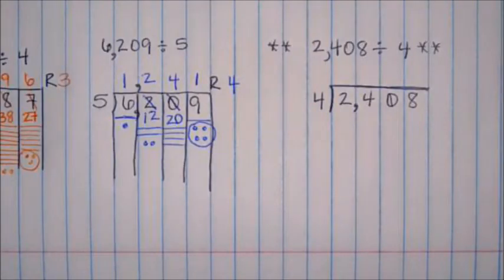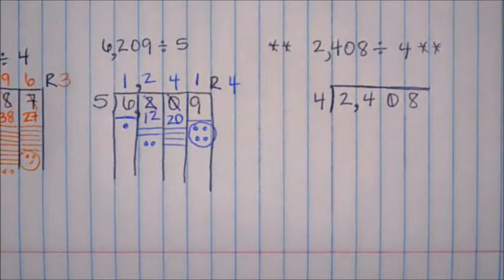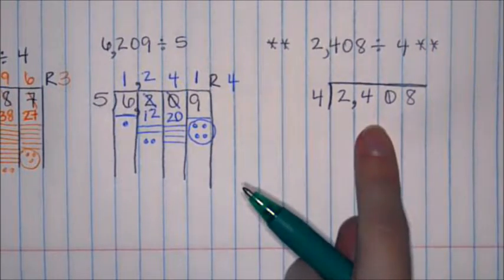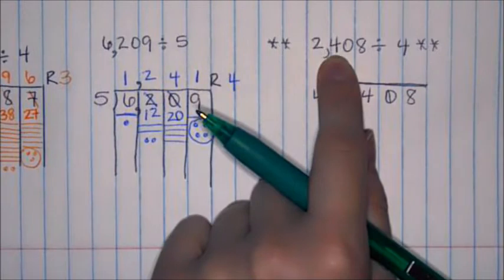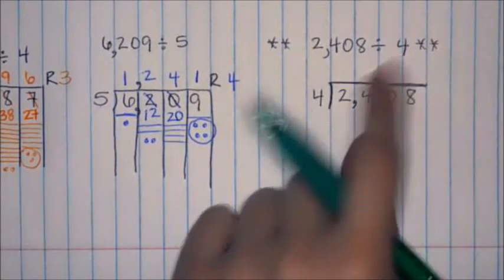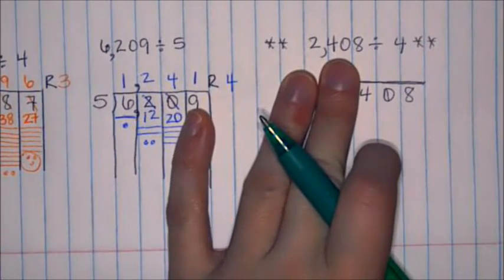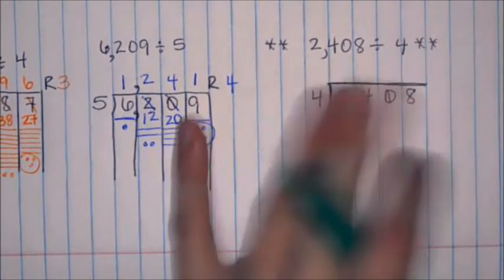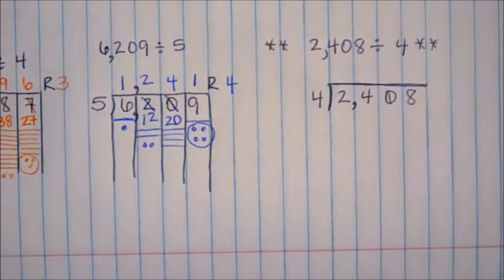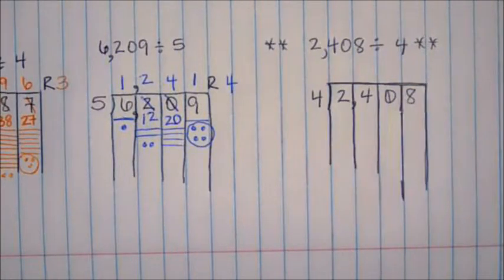This one is the bonus math problem right here. This would be a kind of problem that would really trip you up. So what I'm going to do is show this to you in hopes that you can look back and if you have a problem that's going to trip you up, this would probably be the kind of problem that would do it. So it's 2,408 divided by 4. The zeros typically trip people up. So we're going to see how this plays out when we're doing the problem. I need to bring down my walls.